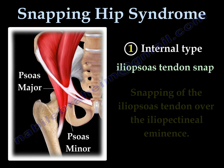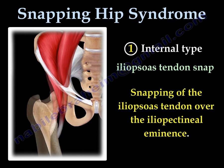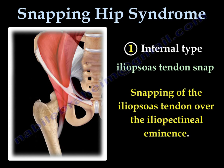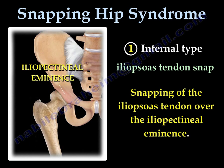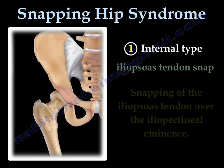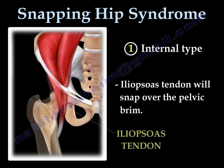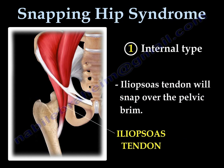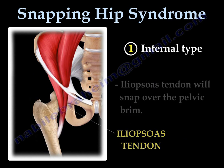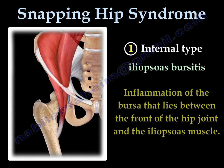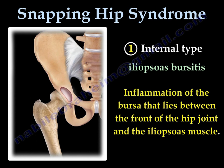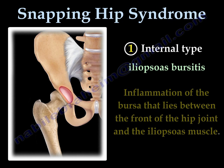Internal iliopsoas tendon snap: the snapping of the iliopsoas tendon occurs as it moves over the iliopectineal eminence. The iliopsoas tendon will snap over the brim of the pelvis. It is caused by inflammation of the bursa that lies between the front of the hip joint and the iliopsoas muscle or tendon.